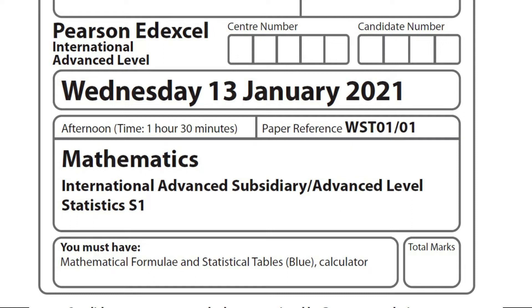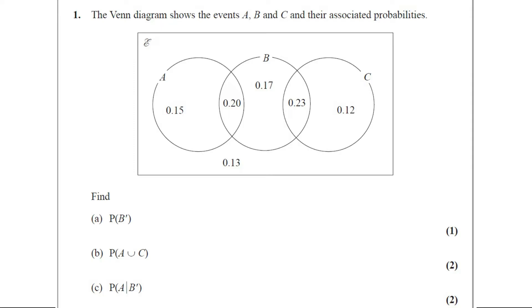Today we are going to solve Jan 2021 S1 paper. This paper consists of six questions. Question number one. The Venn diagram shows the event A, B and C and their associated probabilities.